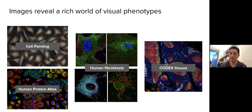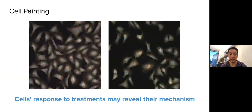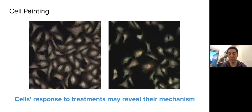Here are examples of the types of images we process at the Broad Institute. I'm going to focus on a specific imaging protocol called cell painting. With cell painting, we capture cellular response using five fluorescent channels that reveal eight major compartments of the cell in an unbiased way — meaning we are not specifically targeting one activity, but comprehensively collecting information about cell morphology.